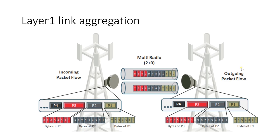The modem at the transmitter end monitors the speed and congestion on existing channels and distributes bits and bytes accordingly. There is no dedicated backup channel — if a carrier fails, data is redistributed to the remaining channels; once the failed channel recovers, data is redistributed across all channels again. This technique is also combined with QoS settings so that high-priority traffic is preserved over low-priority traffic.